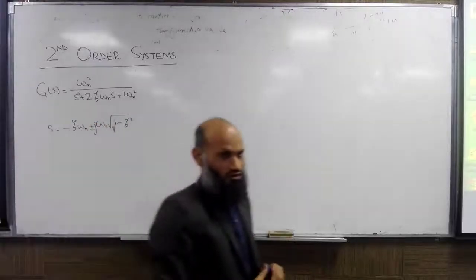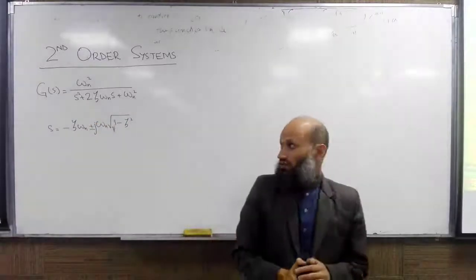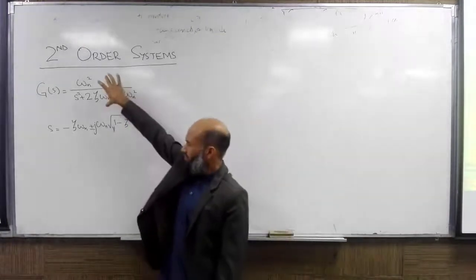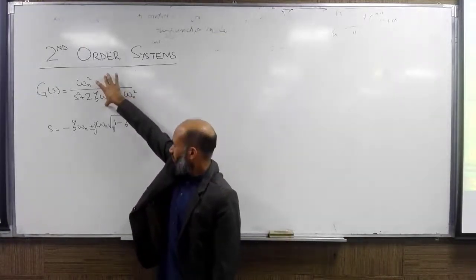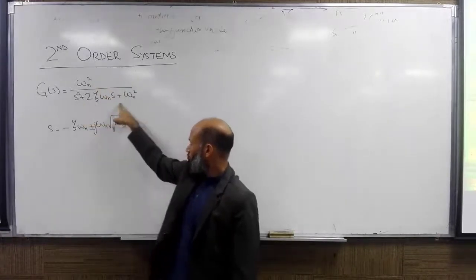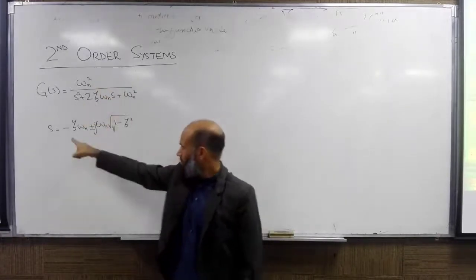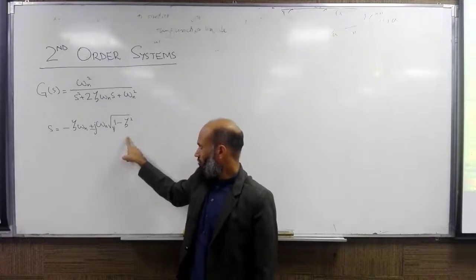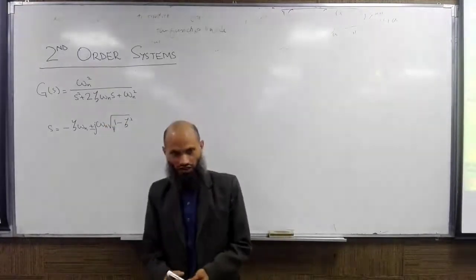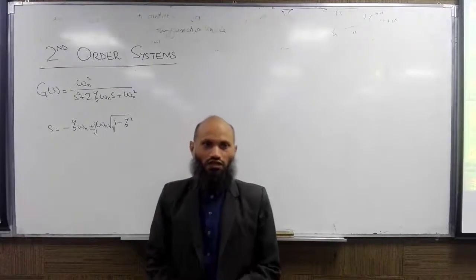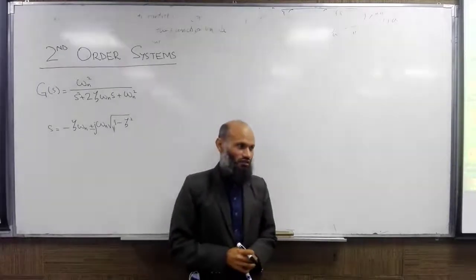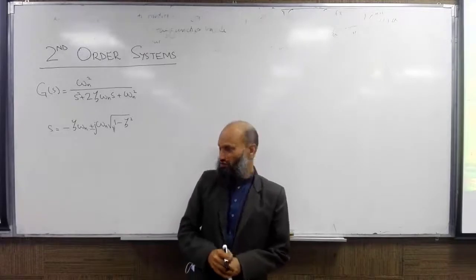We were talking about second order systems. The general transfer function of a second order system is given by this expression. The poles are the roots of the denominator polynomial, located over here. We can simply use the quadratic formula to determine the location of the poles. If you know the location of the poles, we can qualitatively describe the behavior of the system.